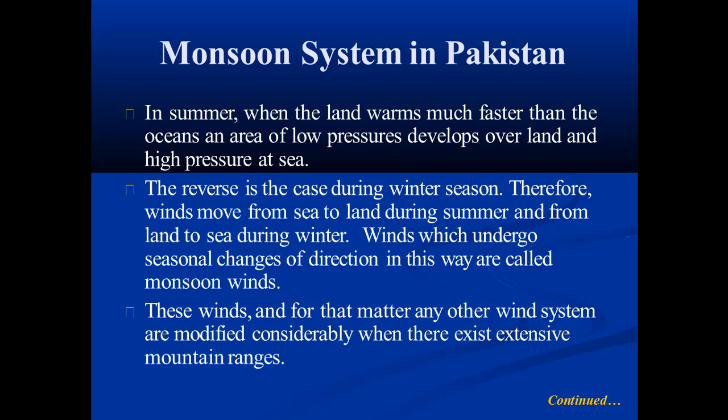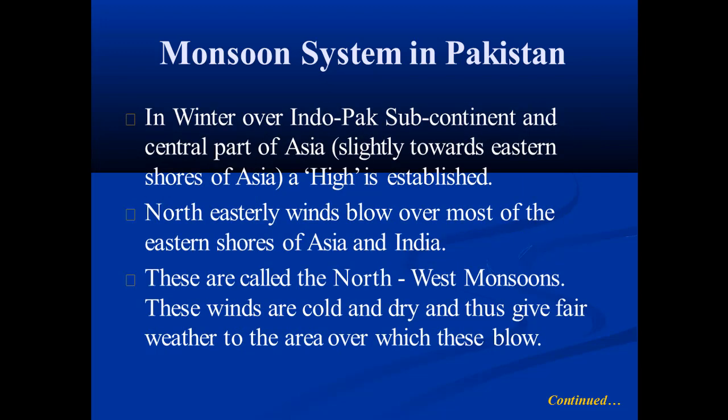These winds, and for that matter any other wind systems, are modified considerably when there exist extensive mountain ranges. A northeasterly wind blows over most of the eastern shores of Asia and India, and these are called the north-west monsoons.